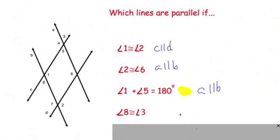And last but not least, angle 8 is congruent to angle 3. All right, well, you can see this line is not even in use, right? We're using this as our transversal, so these are outside the lines, so it would have to be these two, because they're alternate exterior angles, so we would say A is parallel to B.